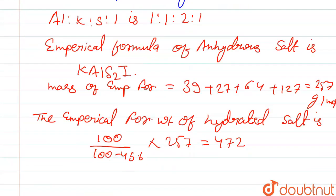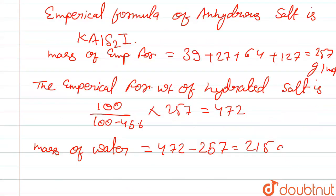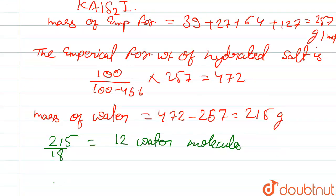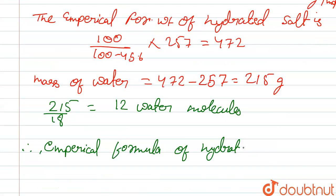The mass of water present in one formula unit of crystalline salt is 472 minus 257, which equals 215 grams. This corresponds to 215 divided by 18, which is 12 water molecules. Hence the empirical formula of the hydrated salt is AlKS₂I·12H₂O.